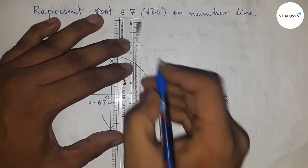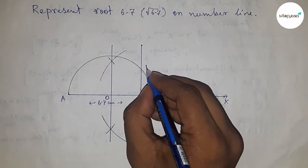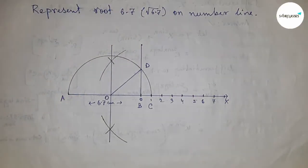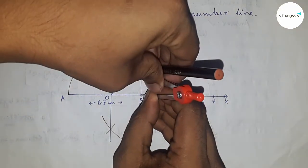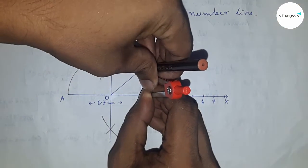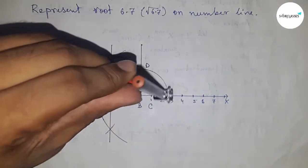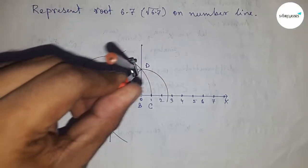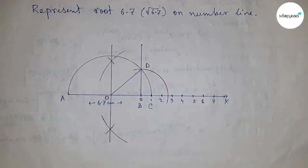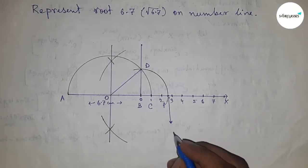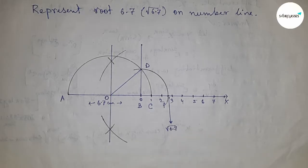Join this and it intersects at point D. Next, take the length BD and construct an arc. Draw an arc which cuts the number line at a point. This is point P, and it represents root 6.7.